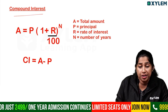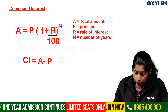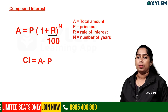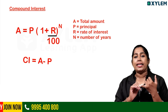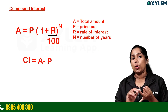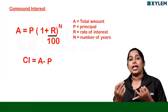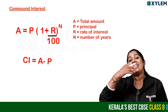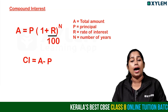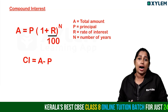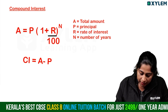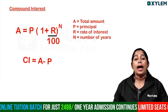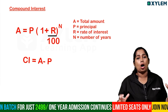For compound interest, CI equals A minus P — that is, total amount minus the principal amount. This formula is also used for population increase and price increase or decrease over a period of time, which we encounter in the chapter on comparing quantities.